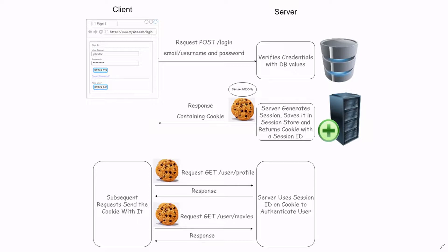If you're going to be making a simple site that just needs to log people in and keep them logged in, then I would recommend using Sessions. On the other hand, if you want to create an API or if you have something that's going to require a lot of horizontal scaling, then I would recommend looking into JSON Web Tokens.